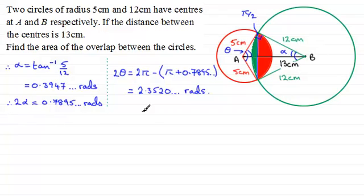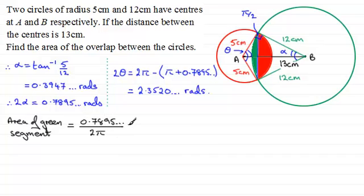I'm now in a position to work out the area of each segment. So let's just start with the green segment. I'll put area of the green segment. And to do this, what we do then is work out the area of the sector and take away the area of the triangle. So the area of the sector, remember, is going to be the angle, which in this case is 2 alpha, 0.7895 and so on radians. We compare that with a full turn of 2 pi radians. It's this fraction of the area of the complete circle here. So that's going to be pi r squared where the radius then is 12 centimeters. So we've got pi times 12 squared. So that's the area of the sector. And from this I subtract the area of the triangle.